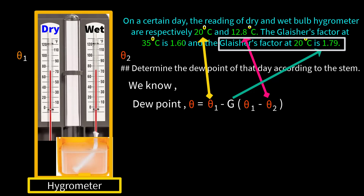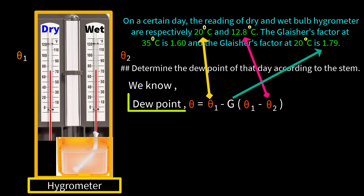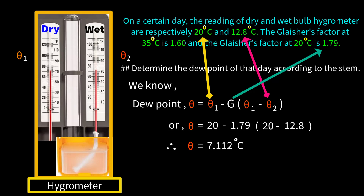The value of G is always taken based on the temperature reading of the dry bulb thermometer or air temperature. Now applying Glacier's law: θ = 20 − 1.79 × (20 − 12.8). Therefore, θ = 20 − 1.79 × 7.2 = 20 − 12.888 ≈ 7.112°C. This is our final answer.